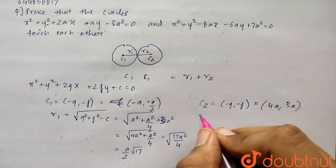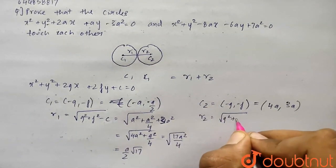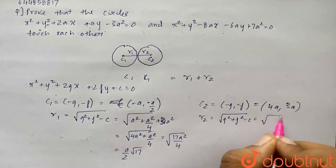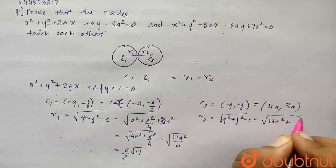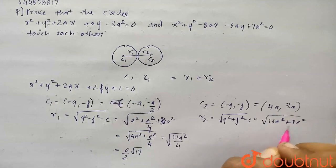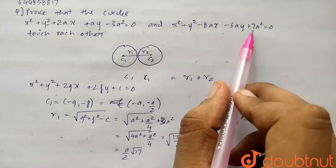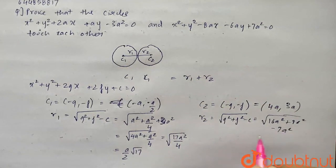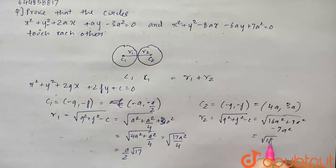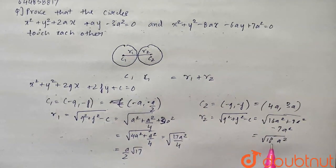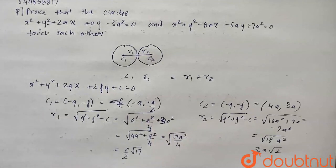Similarly, R2 equals root of g squared plus f squared minus c, where g and f are 4a and 3a. So it is root of 16a squared plus 9a squared minus 7a squared, which is root of 18a squared. Since 18 can be written as 9 times 2, R2 equals 3a root 2. So now we have R1 equals a by 2 root 17 and R2 equals 3a root 2.